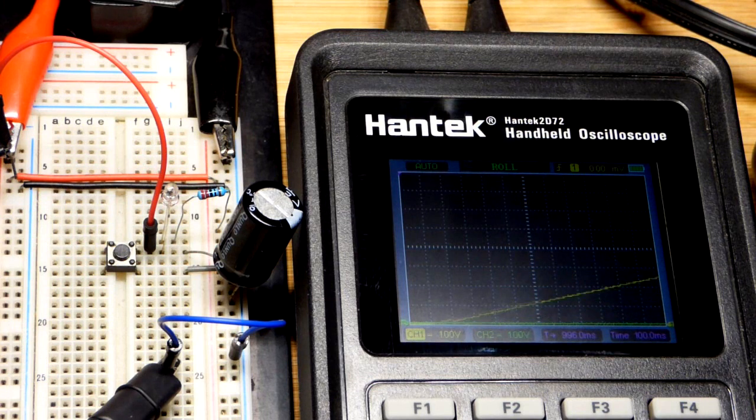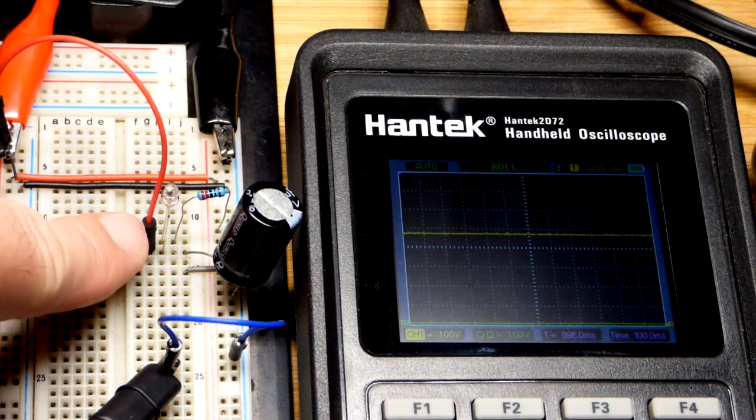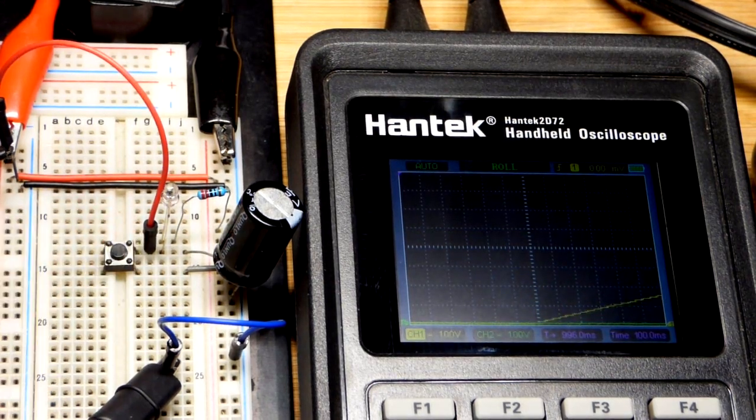So I have the lamp at the brightest setting and there you can see how quickly the capacitor is charging right there. That is a voltage ramp. The voltage is steadily rising.